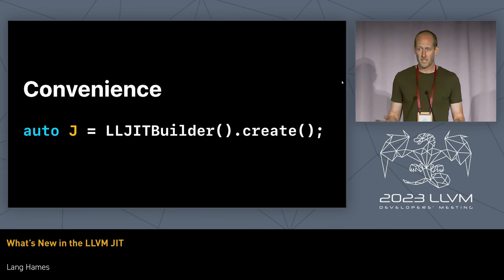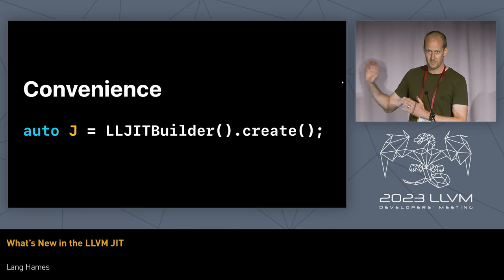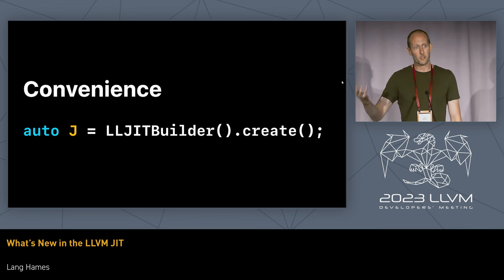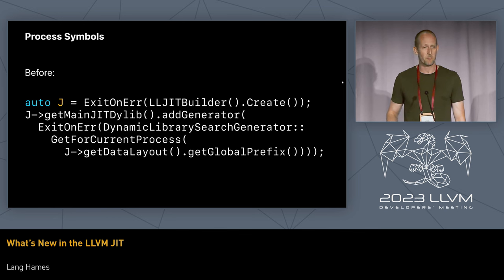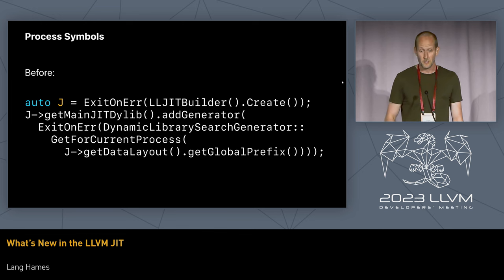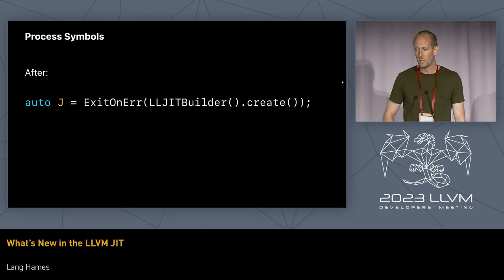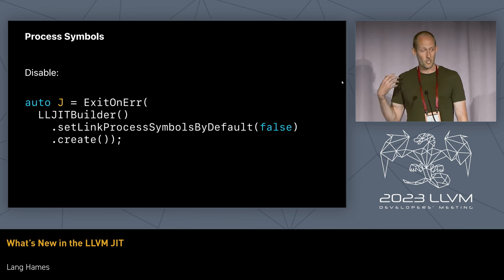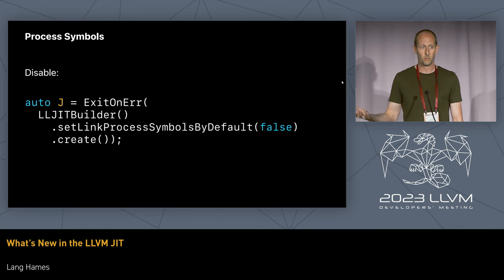On convenience APIs — if you've never used the LLVM JIT before, this is how you create an LLVM JIT instance: it's just one line of code. Previously you immediately needed a bunch of extra boilerplate to make process symbols available to the LLVM JIT. Now your default JIT instance will automatically reflect symbols from the surrounding process, so your JITted HelloWorld will work out of the box. You can opt back out of this by calling set_link_process_symbols_by_default(false) when you configure your JIT.